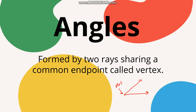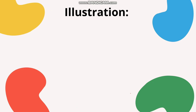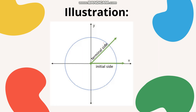An angle is in standard position if it is drawn in the xy-plane — also known as the coordinate plane or Cartesian plane — with its vertex at the origin and its initial side on the positive x-axis. Looking at this illustration, the initial side is this ray here. If the initial side is on the positive x-axis, we can refer to the angle as an angle in standard position.